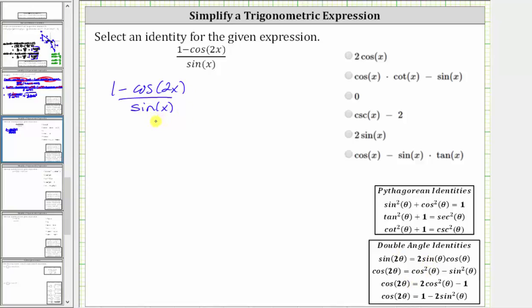Because the denominator is sine x, let's write everything in terms of sine using the identity cosine two theta equals one minus two sine squared theta, which means, in our case, cosine two x equals one minus two sine squared x.